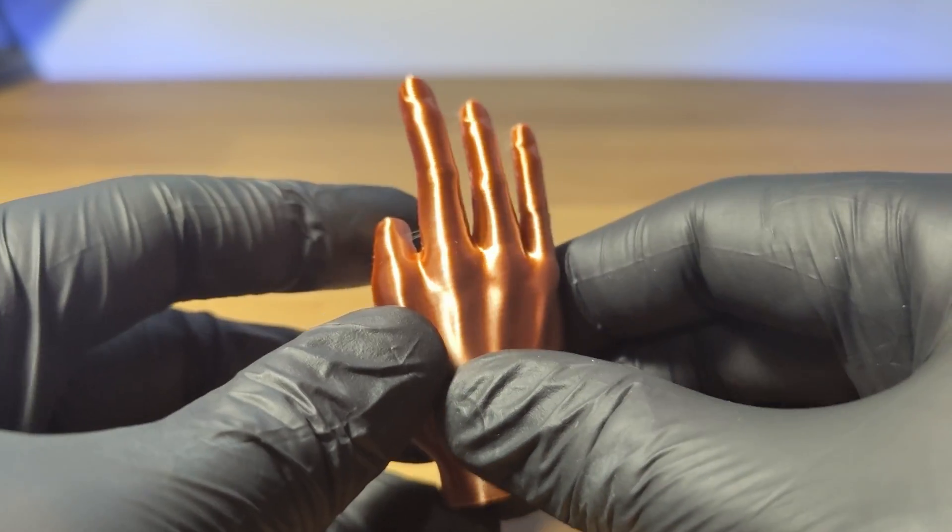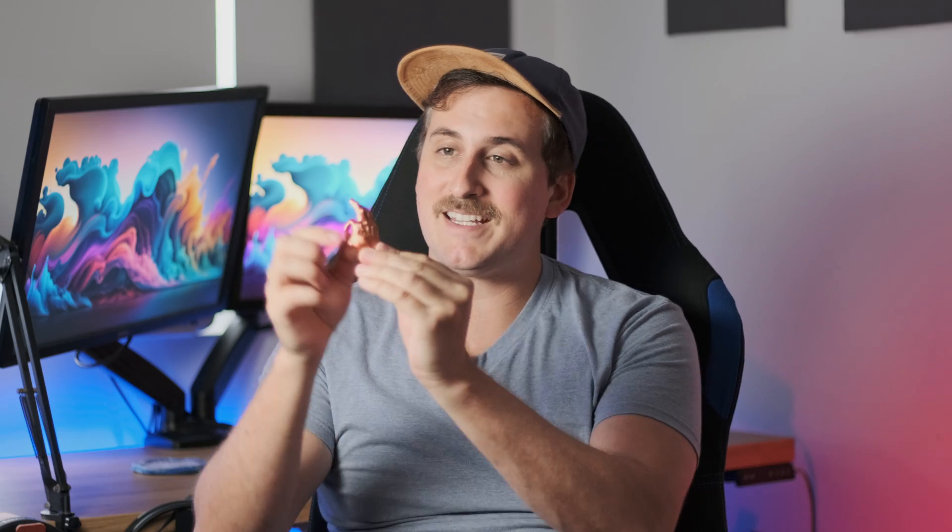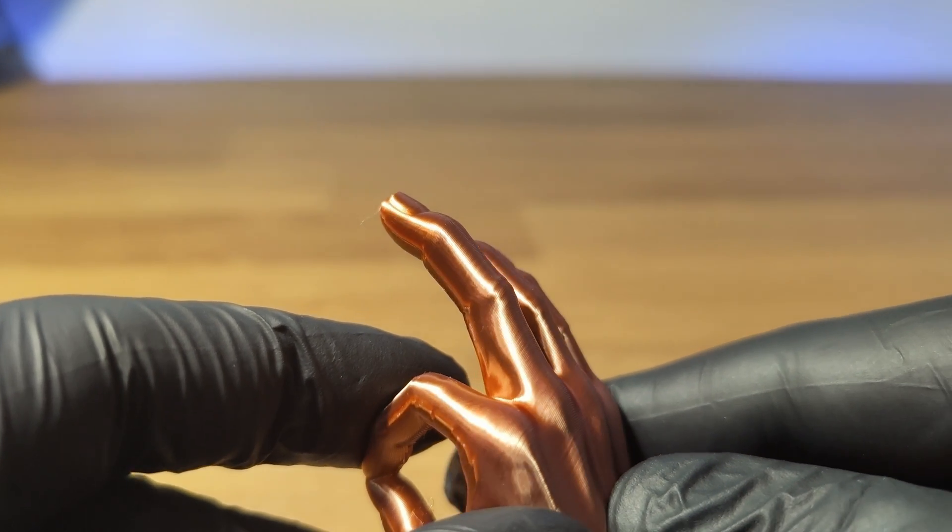We're going to be looking at how to print this hand, but the techniques that I'm going to be showing you are pretty broad and can be applied to many other 3D models out there. As you can see, it has these nimble little fingers that can break quite easily. So let's figure out how to make these as strong as possible so they can stand up to a bit of bashing around.